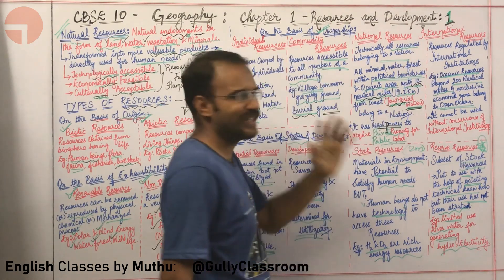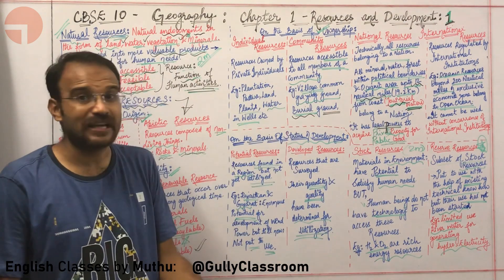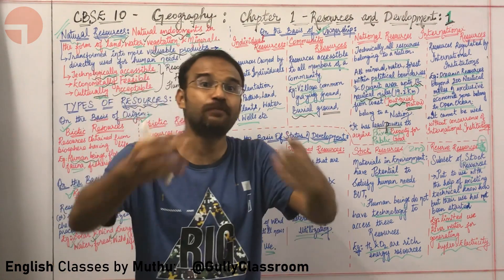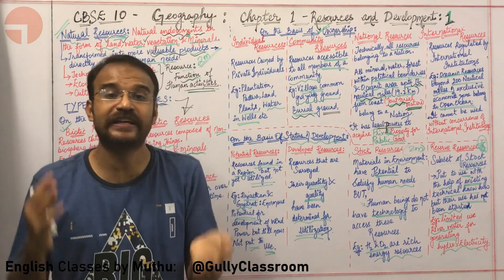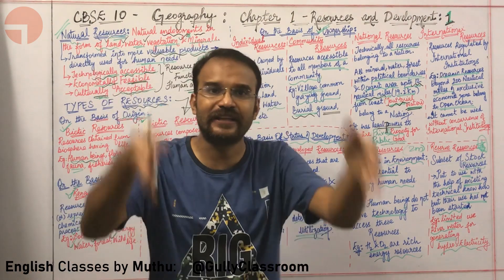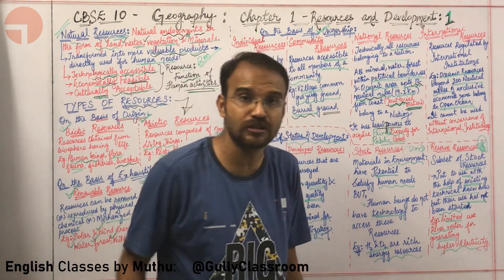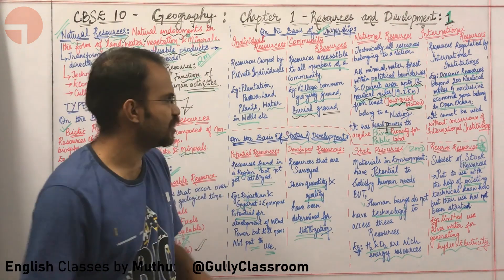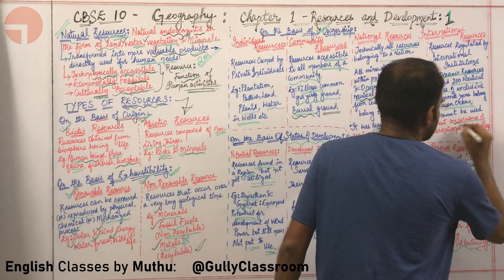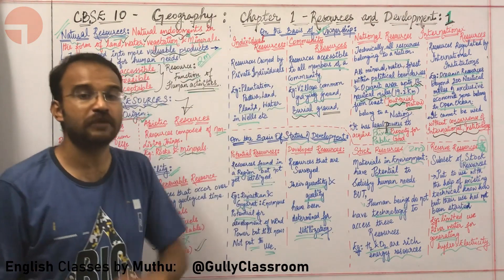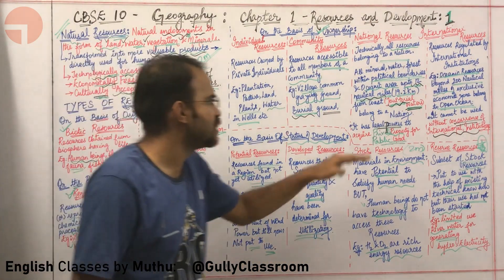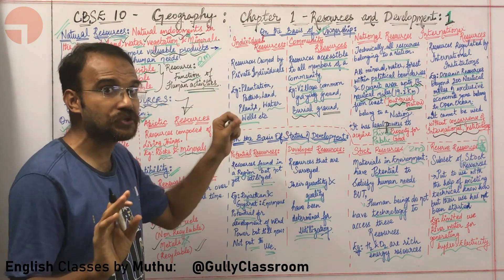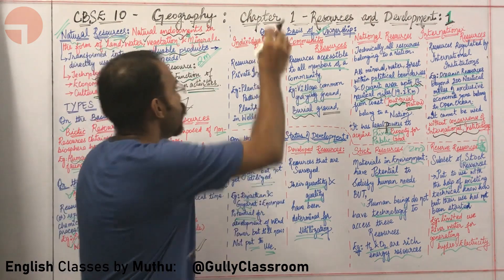International resources are resources that are 200 nautical miles away from any country's political border within the ocean. In order to use those resources, you need to take permission or concurrence from international institutions. Thus, resources can be classified on the basis of ownership.